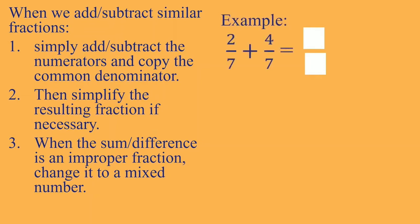Let us have an example. First, we have 2 over 7 plus 4 over 7. We will follow the steps one by one. First, simply add the numerators: 2 plus 4 is 6. And then copy the common denominator which is 7. So we have 6 over 7. Do we need to simplify? No, because 6 over 7 is already in its simplest form. Therefore, that is our final answer.